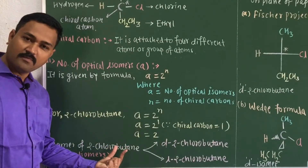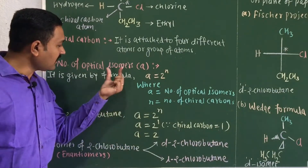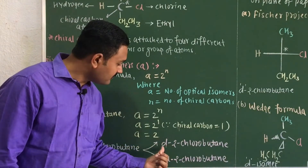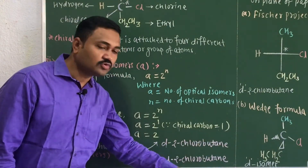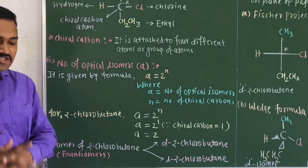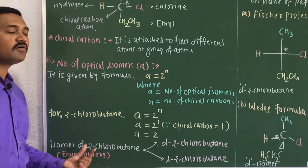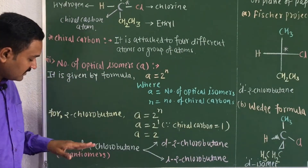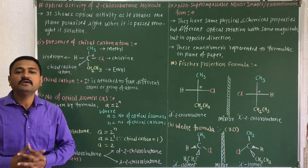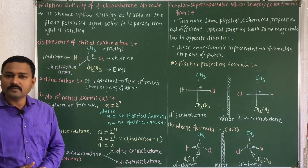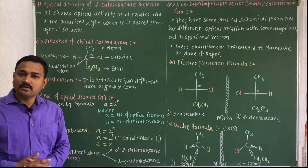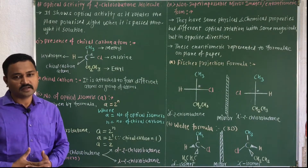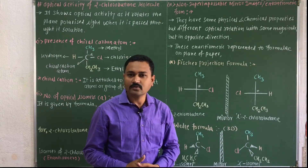The two optical isomers are represented as D-2-chlorobutane and L-2-chlorobutane, also called enantiomers. Enantiomers are the non-superimposable mirror images of each other. So we obtain two different isomers which are called enantiomers — non-superimposable mirror images.